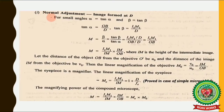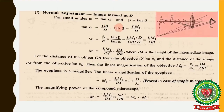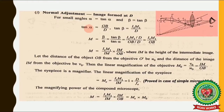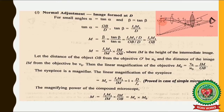Now let's find the magnification for normal adjustment — meaning the image is formed at D, the least distance of distinct vision. For small angles, we can take α = tan α and β = tan β. Since tan θ = perpendicular/base, we get tan α = OB/D, as the object is at the least distance of distinct vision.